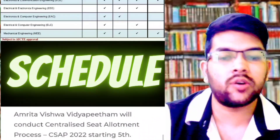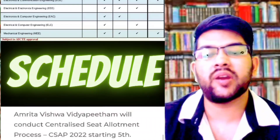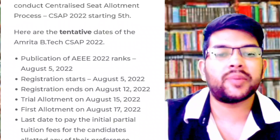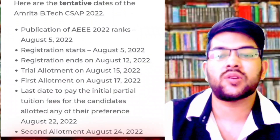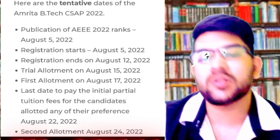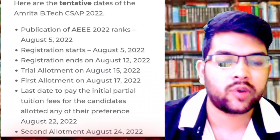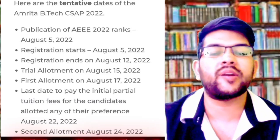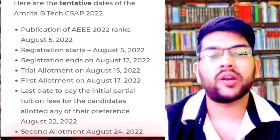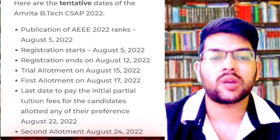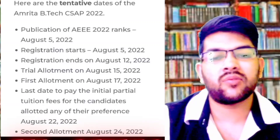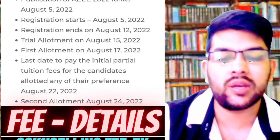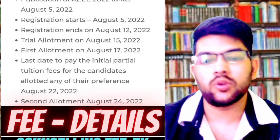The schedule is very important — if you miss it, you miss the whole counseling process. These are tentative dates as they may change. Publication of AEEE result based on the best percentile from Phase 1 and Phase 2 is on August 5th. CSAP registration starts the same day, August 5th, and goes until August 12th. Trial allotment (mock allotment) is on August 15th — this is not the actual allotment. First round allotment is on August 17th. Last day to pay provisional fee is August 22nd.